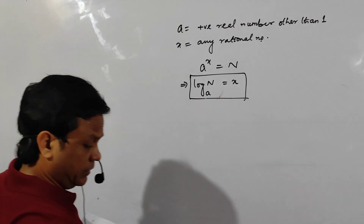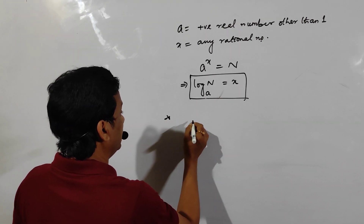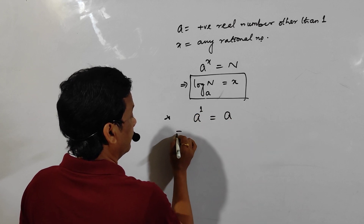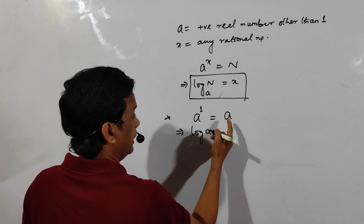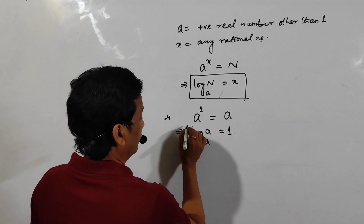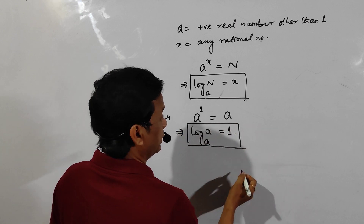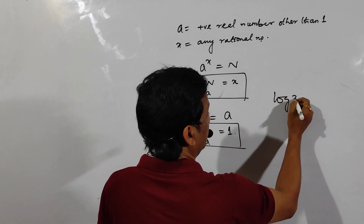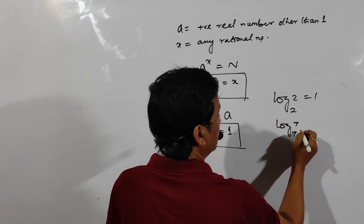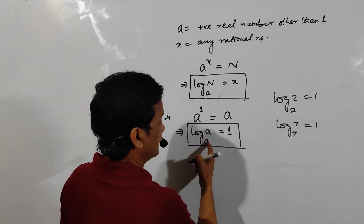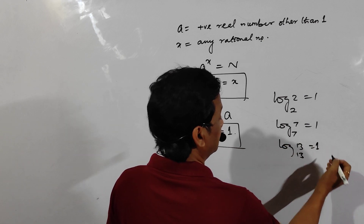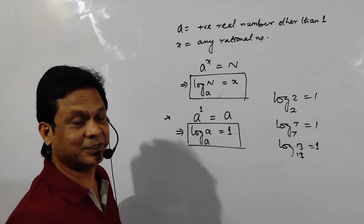Very important: a^1 = a, so log of a to the base a is equal to 1. This is a very important point. For example, log of 2 to the base 2 is 1, log of 7 to the base 7 is 1, log of 13 to the base 13 is 1. If both the number and the base are the same, the answer is always 1.